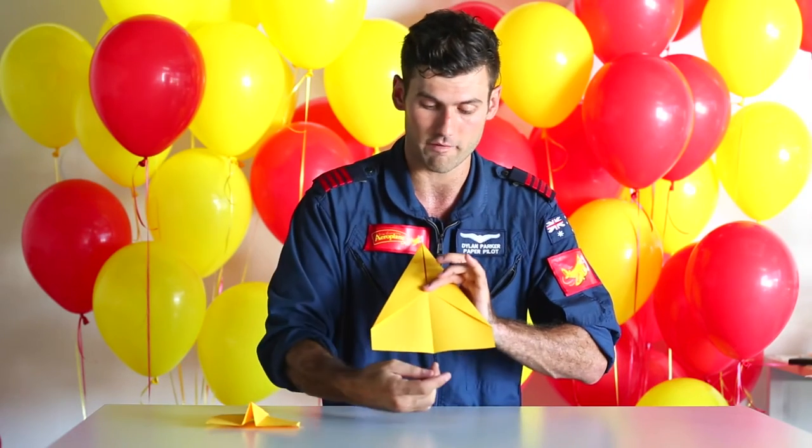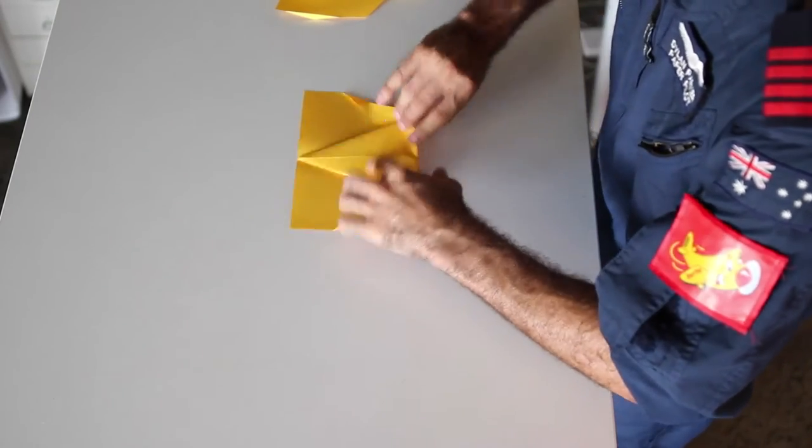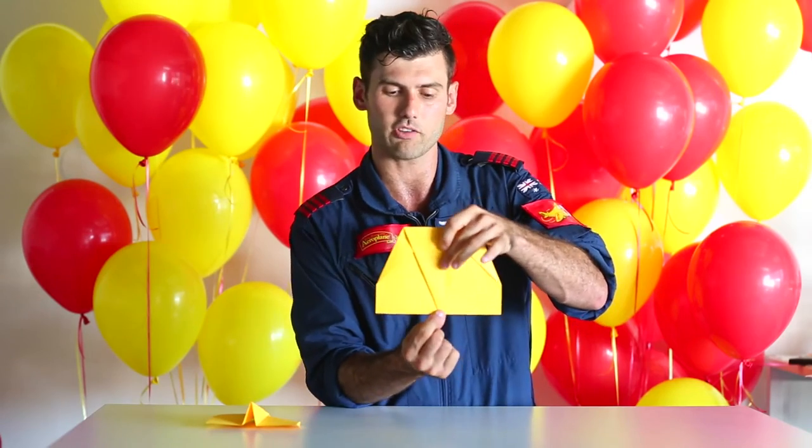Now I want you to look at this point right at the top there. That one we're going to fold all the way down to where that line finishes at the bottom of the page, and I'll do mine and I'll show you what that looks like. All the way down to the bottom looks a little bit like this. See that point right at the bottom touching there.